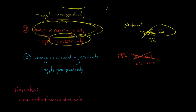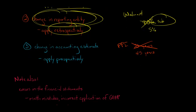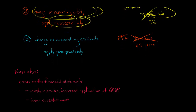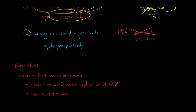Those are the three types of accounting changes. Additionally, you can have errors in financial statements — for example, a math mistake when computing gross profit, or incorrectly applying GAAP such as deducting salvage value when using double declining balance depreciation. When an error occurs, the company must go back and issue a restatement, recasting the prior years' financial statements to correct the error.